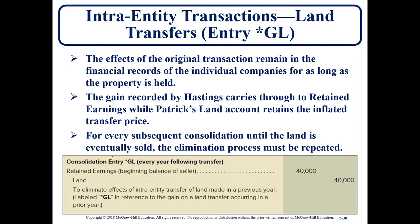In subsequent years, since the gain is going to roll over into retained earnings on the seller's side, we have Entry GL. This is every year after the initial year when the sale took place. We're going to debit retained earnings and credit land in subsequent years, until the land is sold to an outside party or the companies are no longer required to prepare consolidated financial statements.